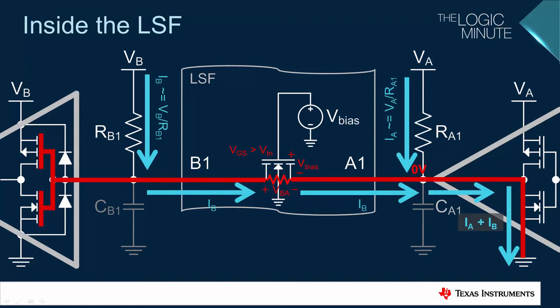The current IB passing through the FET will produce a small voltage drop, shown here as VBA, and therefore the voltage at B1 and the input to the receiver will be slightly higher than the voltage at A1.